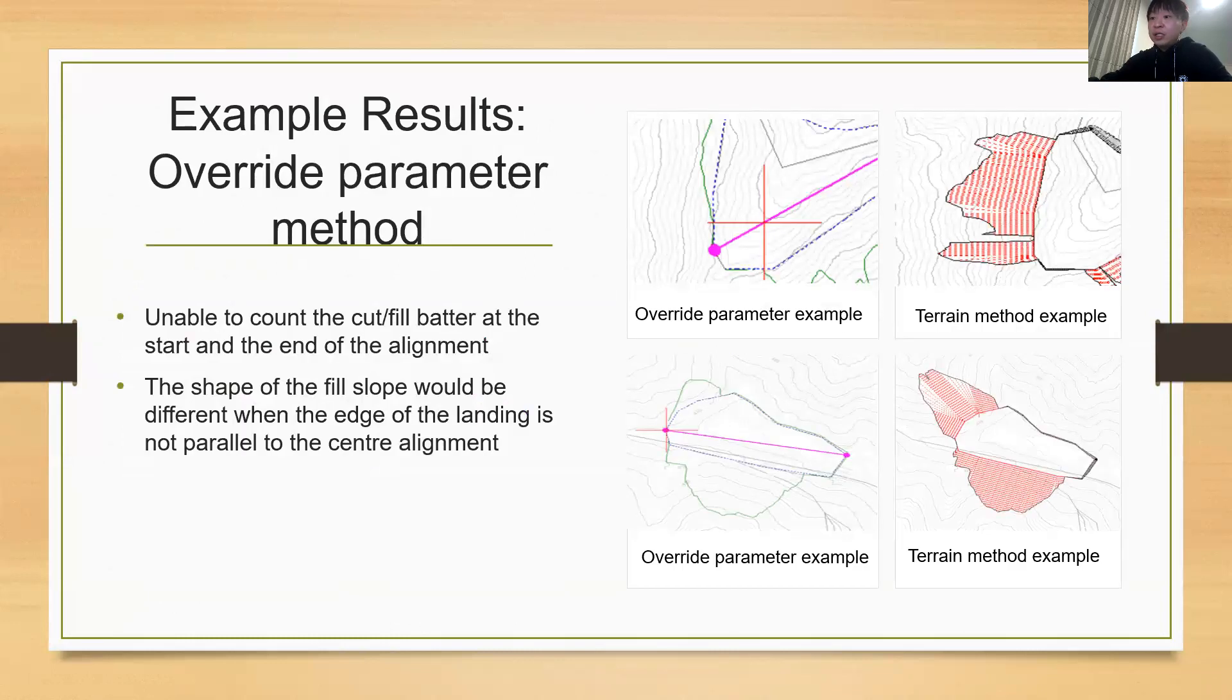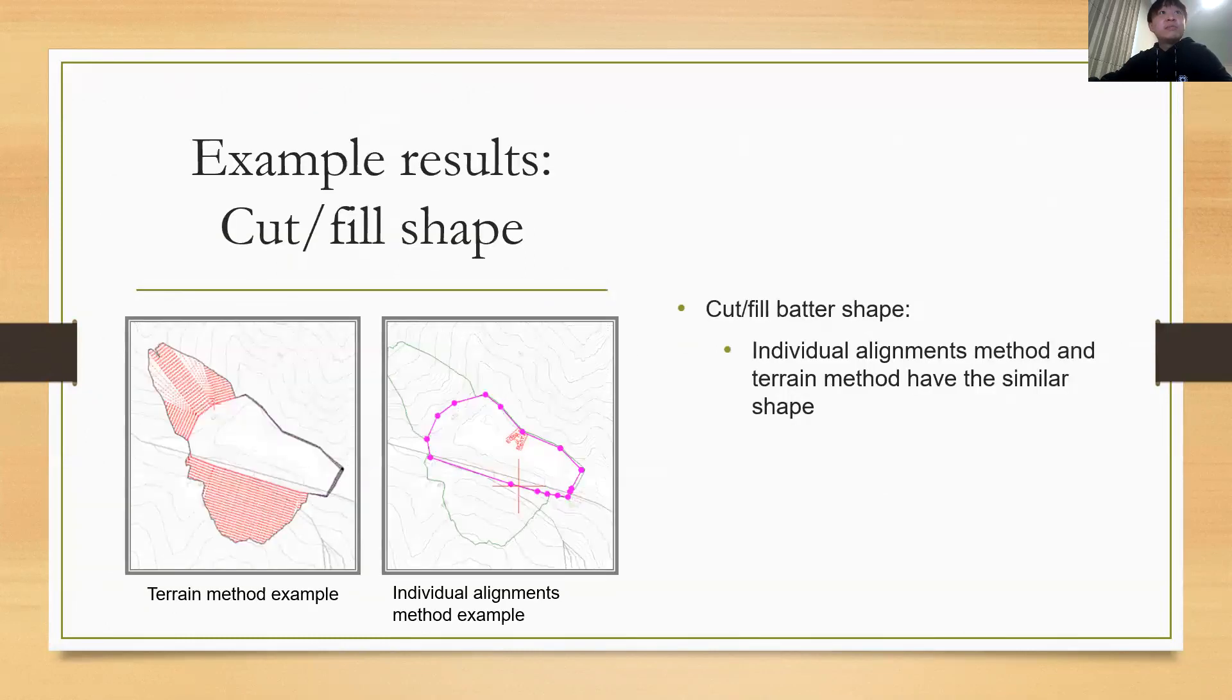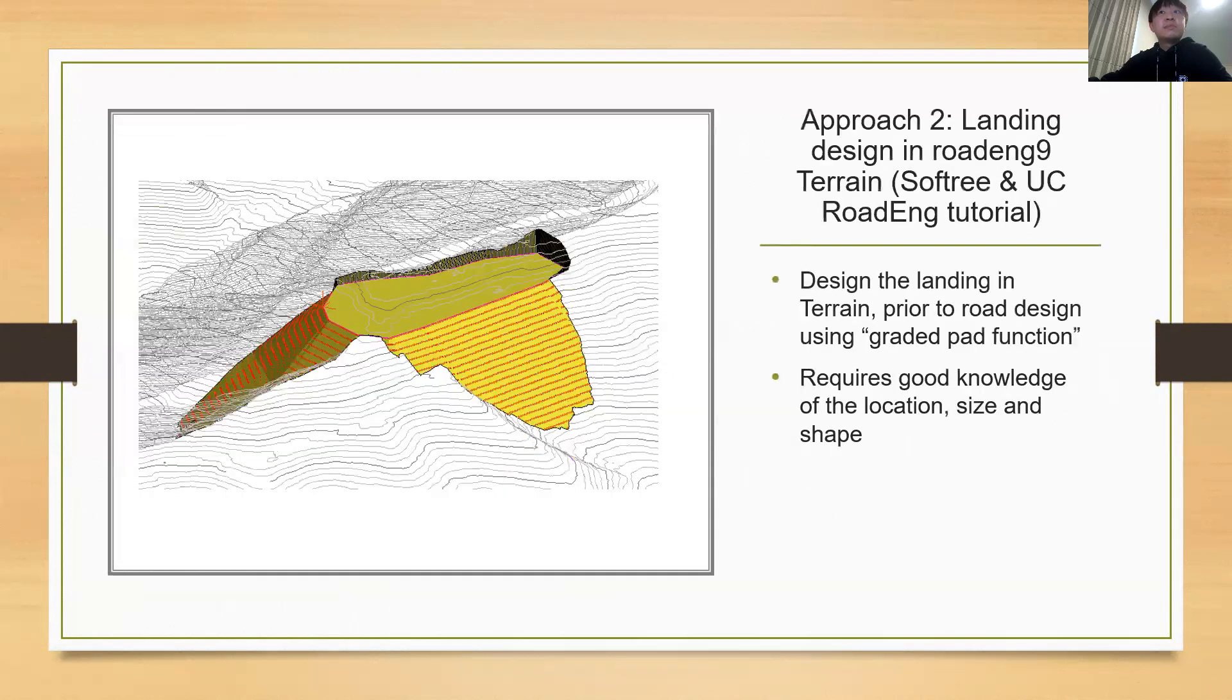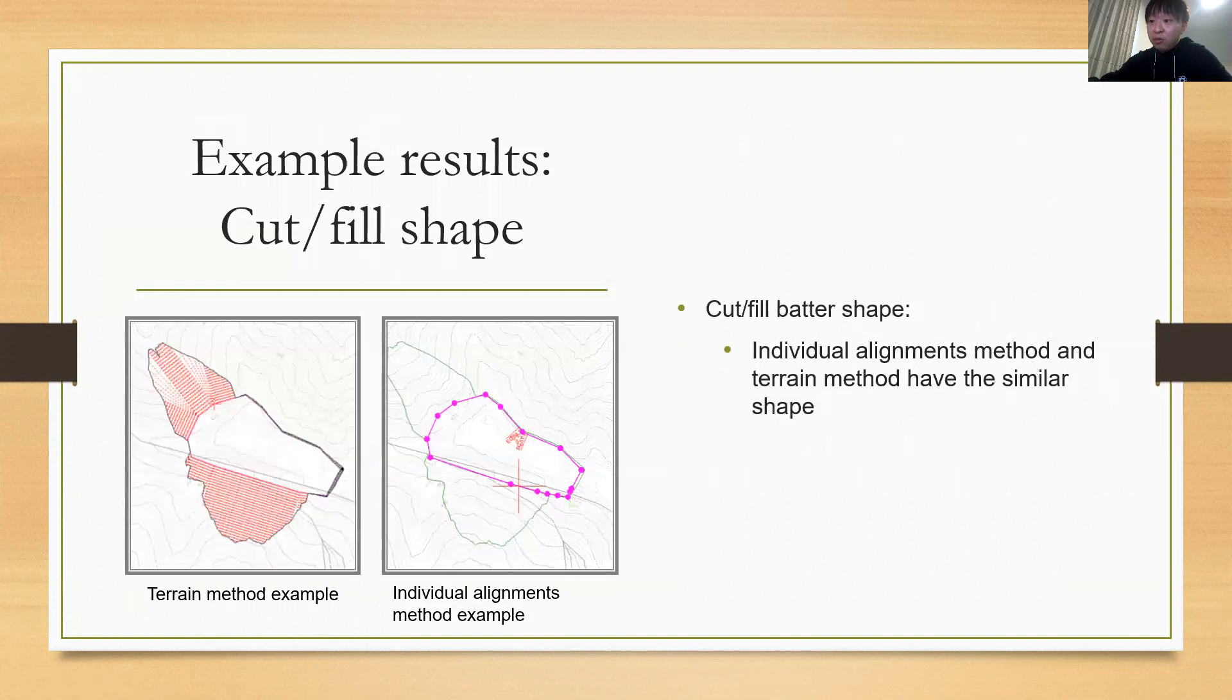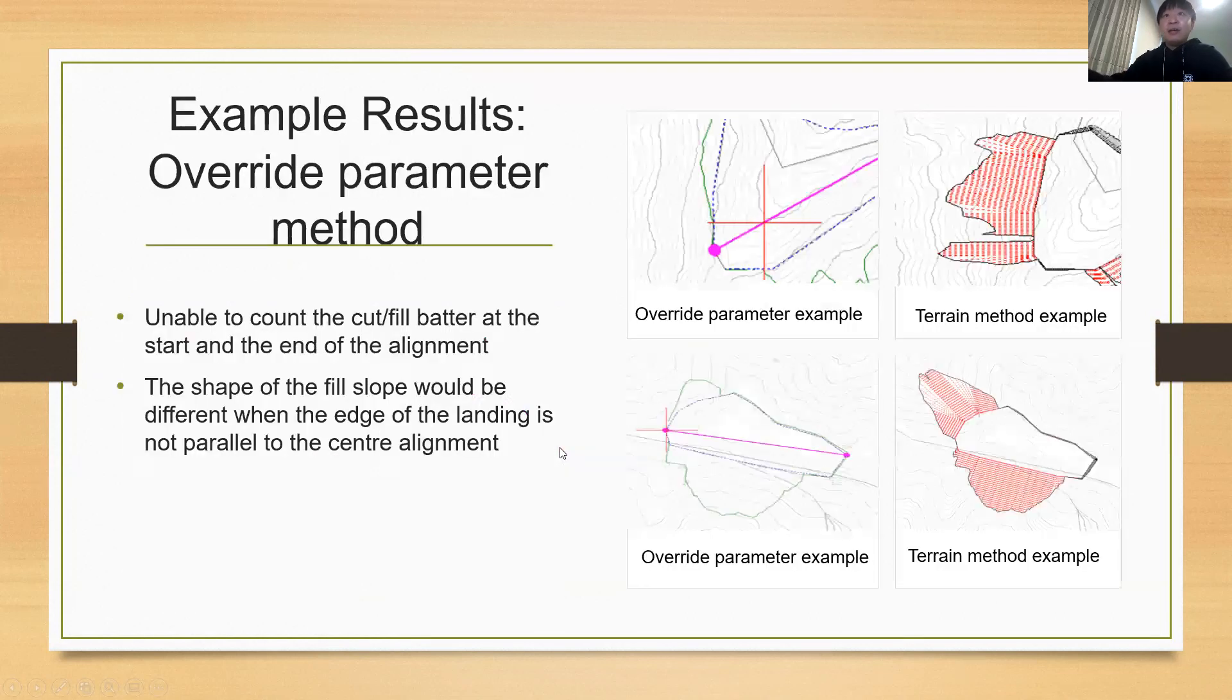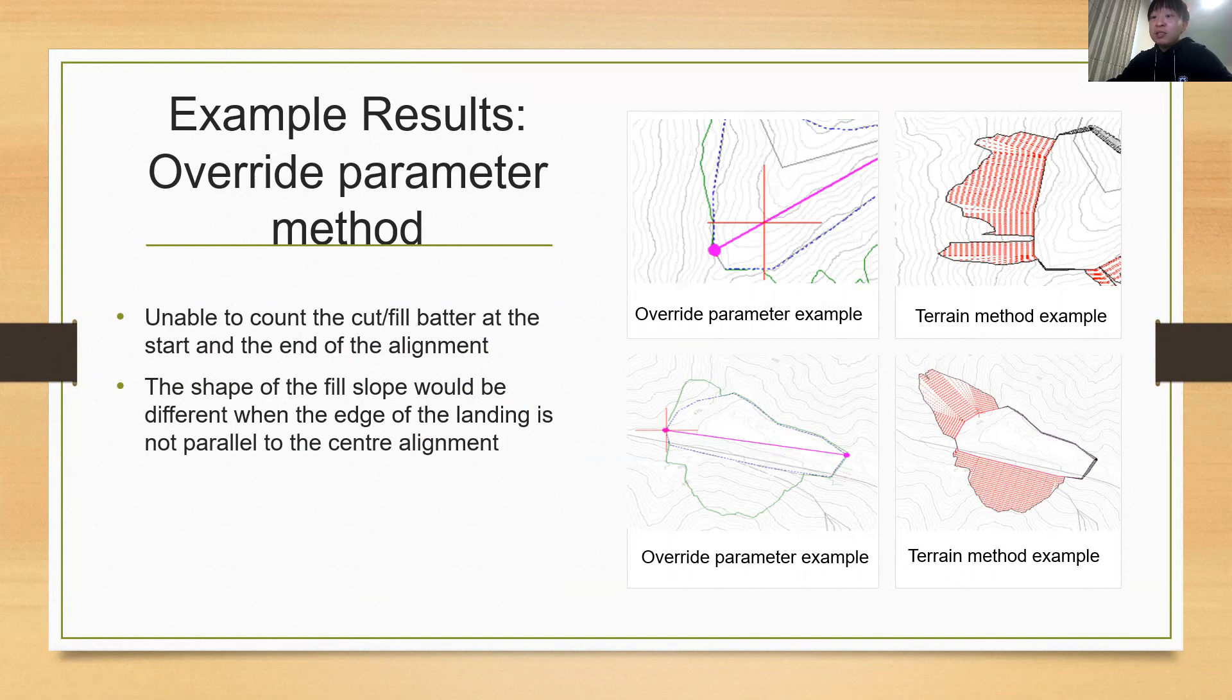So, in the study, it was found that terrain method and individual alignment method has similar cut and fill batter estimation. Here's an example of the comparison between those two methods. But the override parameter method gives different results. The difference was found to be caused by two main reasons. First is that in the location module, it is unable to take the cut and fill batter at the start and the end of the alignments into account.